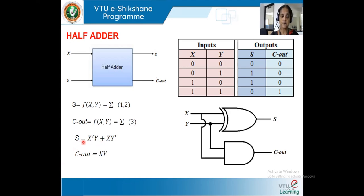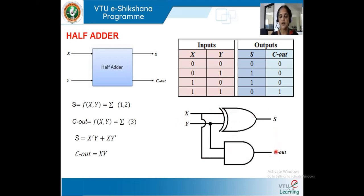We now have equations for S and C_out in terms of inputs X and Y. To draw the logic diagram: S = X XOR Y is implemented with an XOR gate, and C_out = X AND Y is implemented with an AND gate. The same inputs feed both gates. This completes the logical diagram for the half adder.